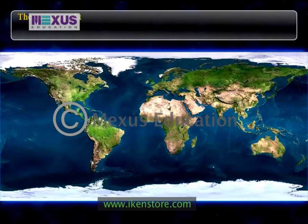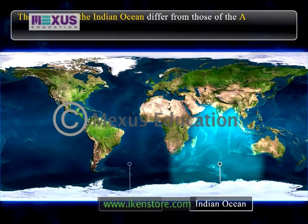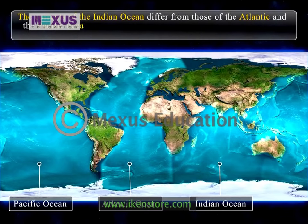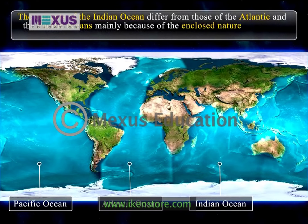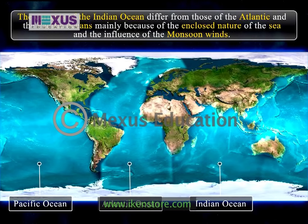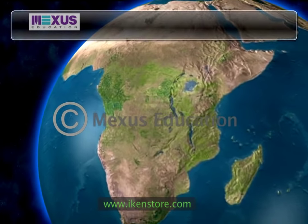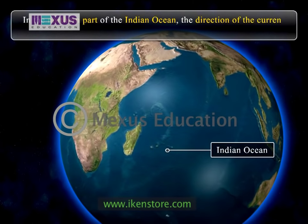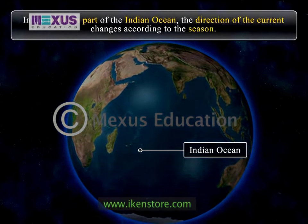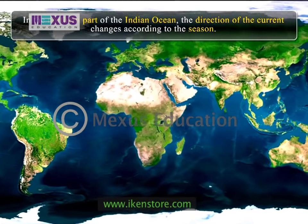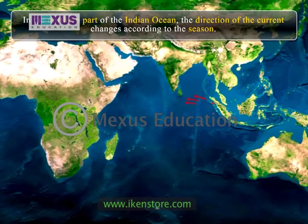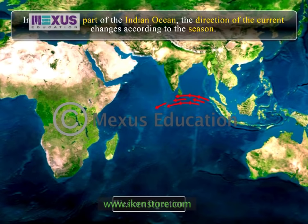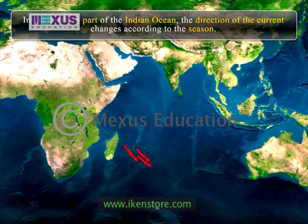The currents of the Indian Ocean differ from those of the Atlantic and the Pacific Oceans mainly because of the enclosed nature of the sea and the influence of the monsoon winds. In the northern part of the Indian Ocean, the direction of the current changes according to the season. In summer, when the southwest monsoon blows, the current flows in the westward direction, and in winter, when the northeast monsoon winds blow, the current flows in the eastward direction.